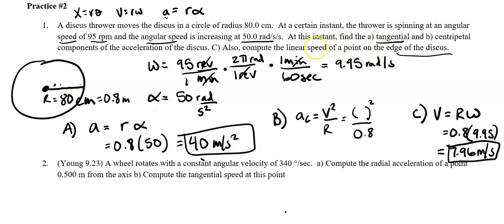So for part B, I should have said, we want the centripetal acceleration. So let's do it at 0.8 meters away from the center. So 7.96, we can plug in for our linear velocity. And I got 79.2 meters per second squared.